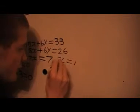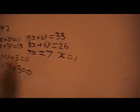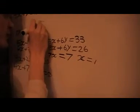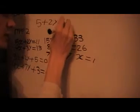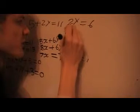And I can substitute into any equation, so I'm going to substitute back in this first one. So that's just 5 times 1, that's 5, so that's 5 plus 2y equals 11. Subtract that from both sides, 2y equals 6, y equals 3.